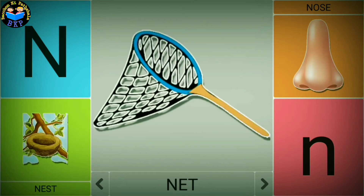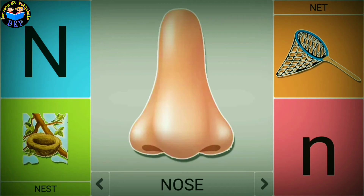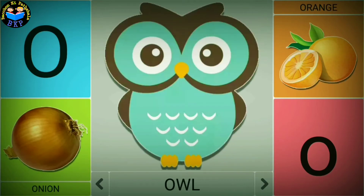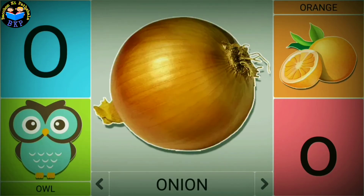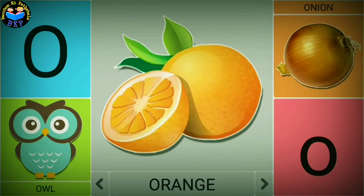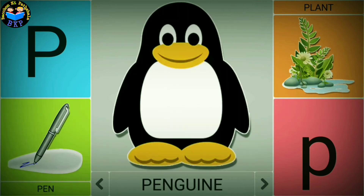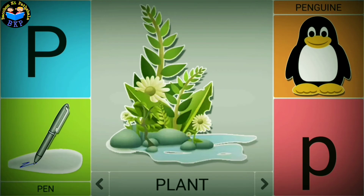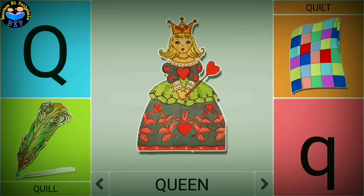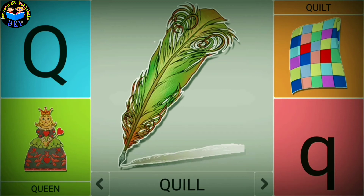N is for nest. N is for net. N is for nose. O is for owl. O is for onion. O is for orange. P is for pen. P is for penguin. P is for plant.